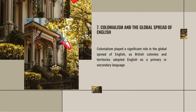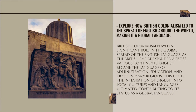British colonialism played a significant role in the global spread of the English language. As the British Empire expanded across various continents, English became the language of administration, education, and trade in many regions. This led to the integration of English into local cultures and languages, ultimately contributing to its status as a global language.